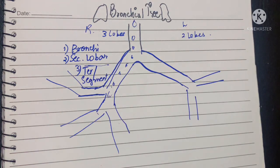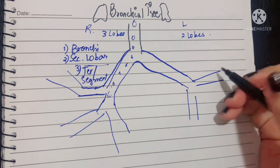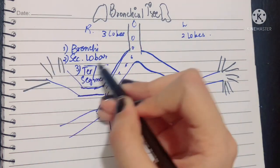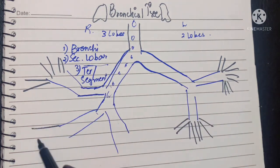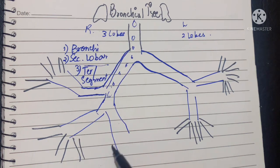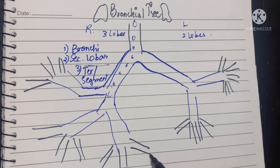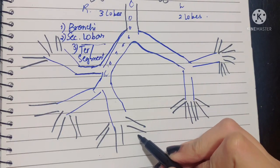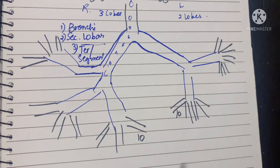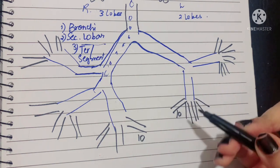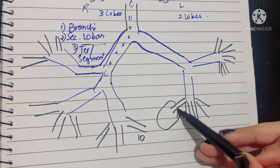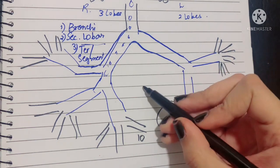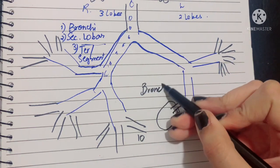After the secondary lobar bronchi, tertiary or segmental bronchi arise, and these are 10 in number. All of the secondary lobar bronchi will further divide into tertiary or segmental bronchi. There are 10 segmental bronchi on each lung, and each segmental bronchus aerates or provides air to a single bronchopulmonary segment.